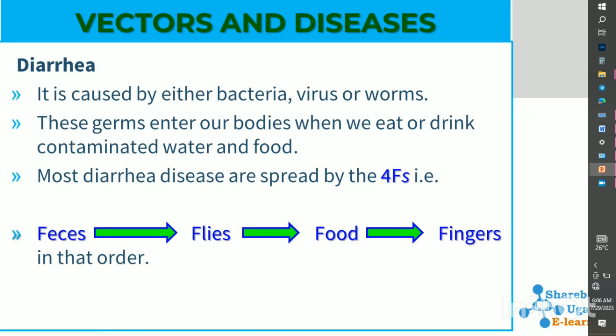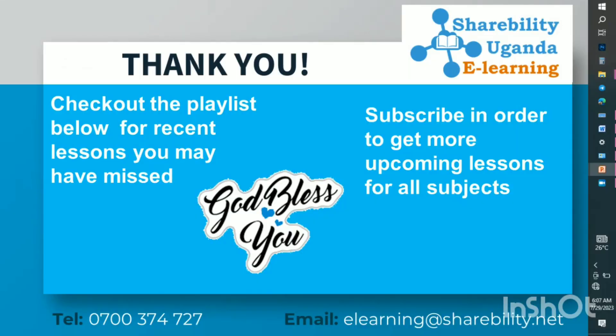Diarrhea is also another disease caused by a housefly. It is caused by bacteria, a virus, or sometimes worms. These germs enter our bodies when we eat or drink contaminated water or food. Most diarrhea can be spread by the four F's: feces, flies, food, and fingers.